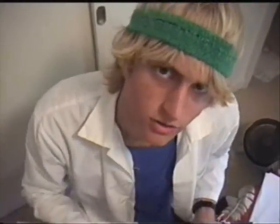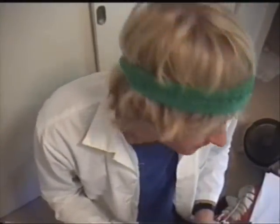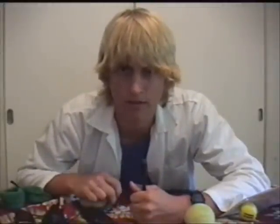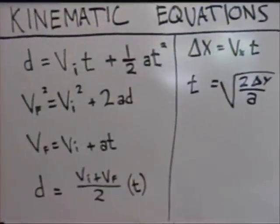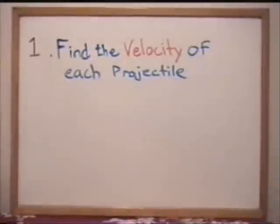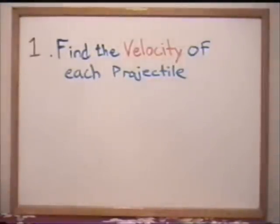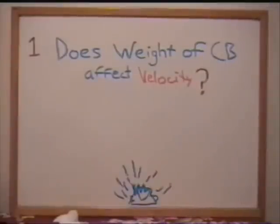Phases two through four involve performing the experiments. Try out different combinations of weights and projectiles and record all your data. Also, remember to act professionally. Phase five involves analyzing your data. Apply your data to the appropriate kinematic equation to find the velocity of each of the launched projectiles. In this experiment you have two goals. First, using kinematic equations, find the velocity of each launched projectile and determine whether the weight of the counterbalance has any effect on the speed of the projectile.